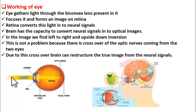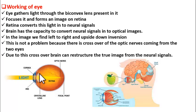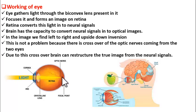When light from an object falls on the cornea — the cornea is the transparent portion of the sclera — the light passes through the pupil and falls on the convex lens. You already know from physics that when light falls on a convex lens, the light after passing through it converges and forms an image at the focal point.